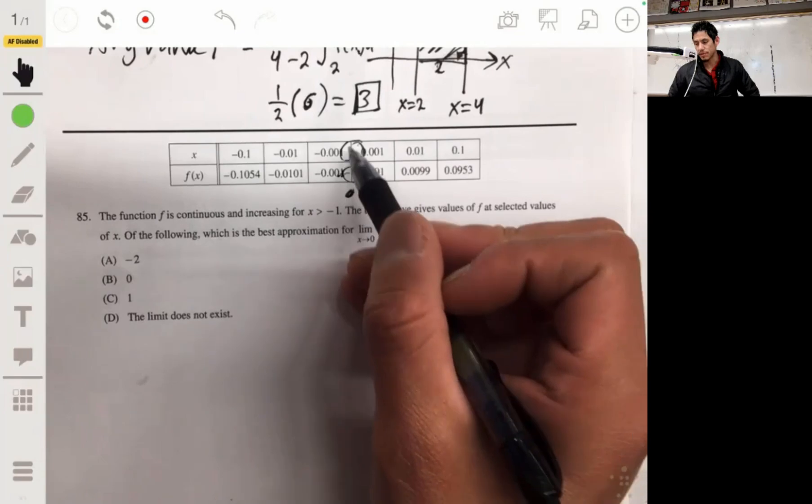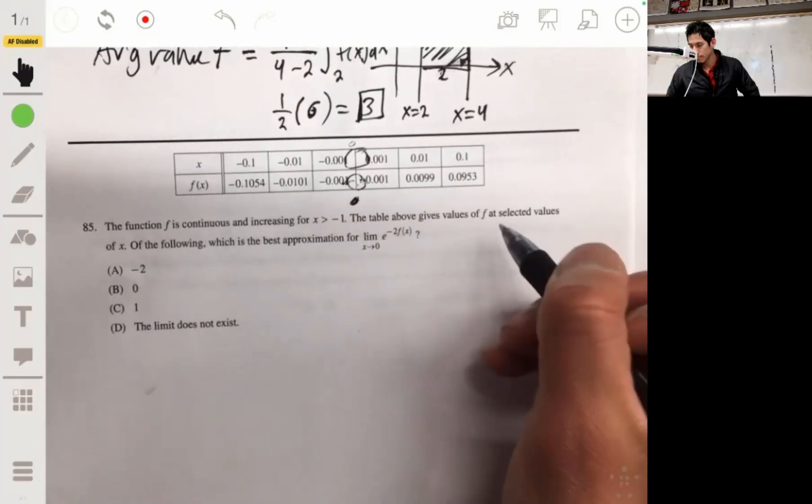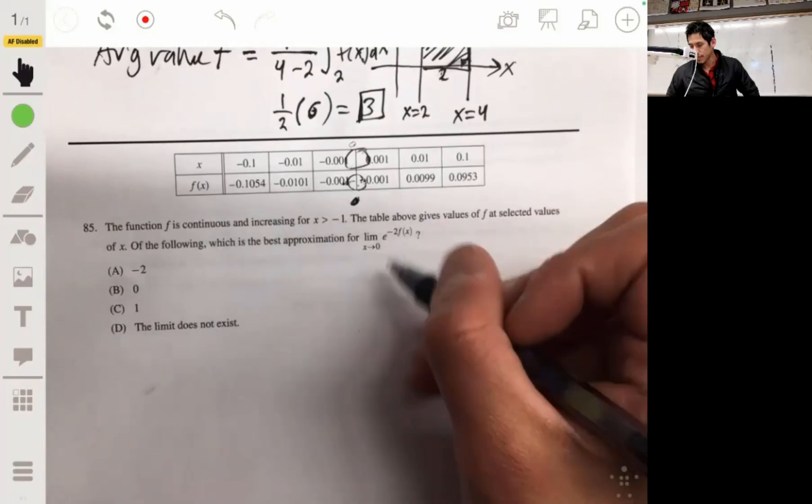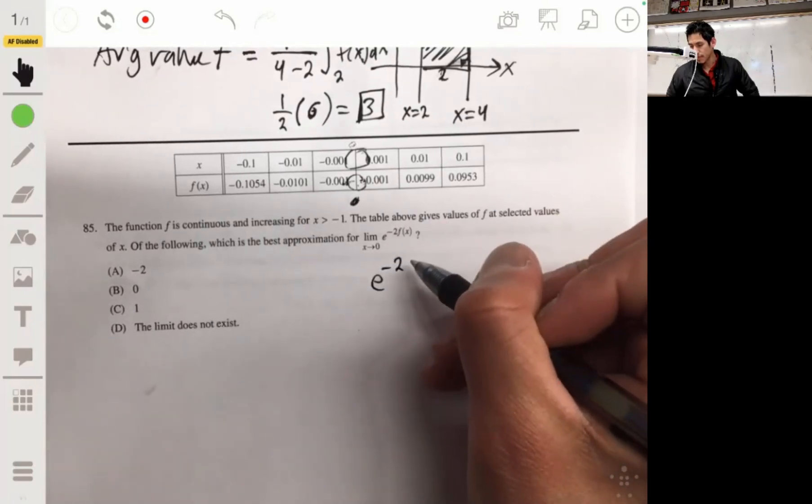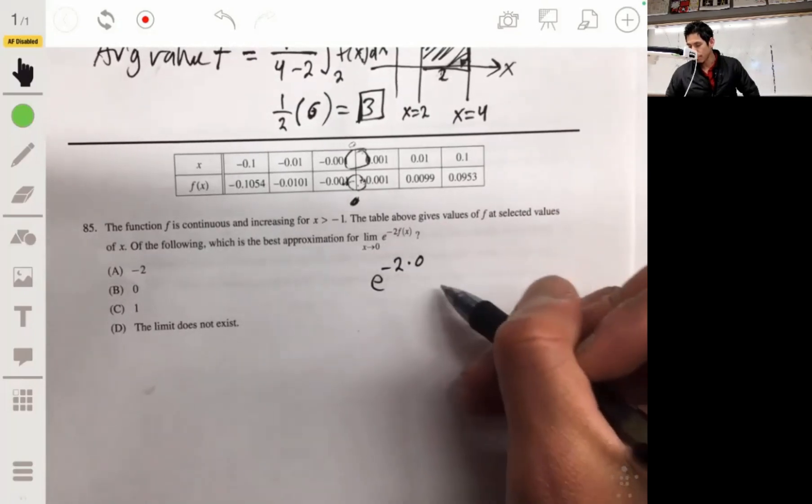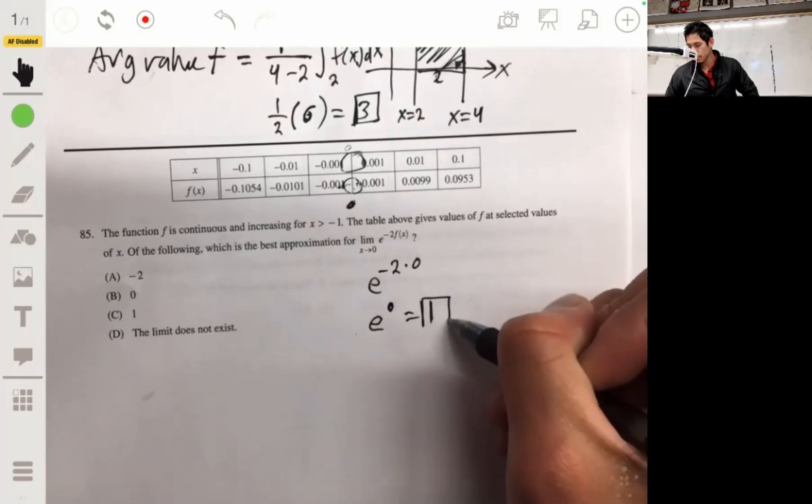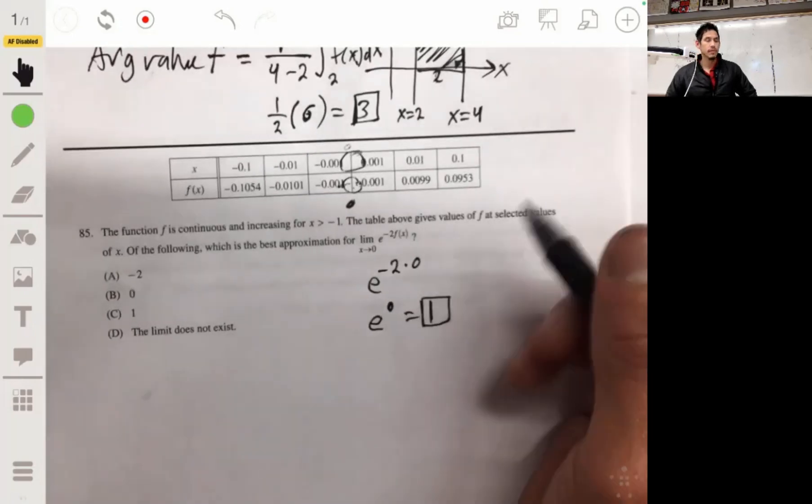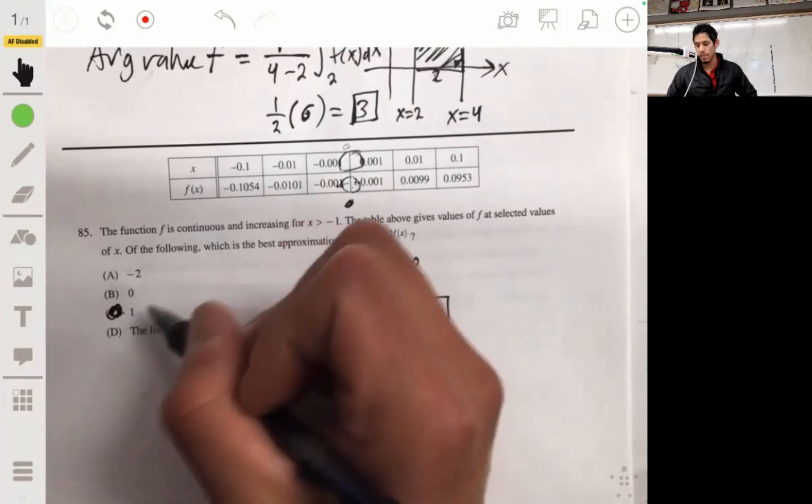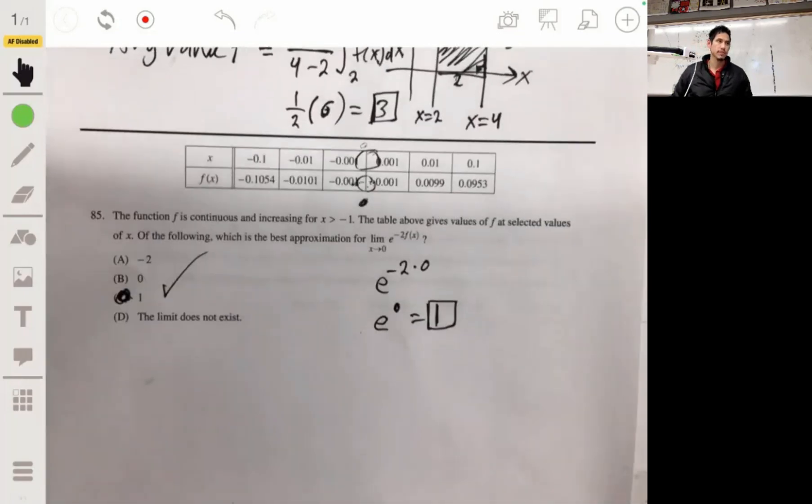That's as x goes to 0, because between these numbers would be 0. So then this is essentially taking e to the negative 2 times 0, or just e to the 0, which is just 1. And so the limit is just 1.